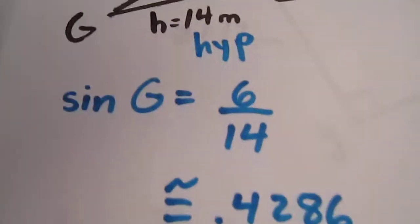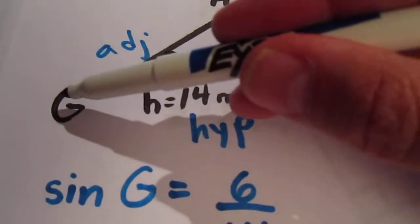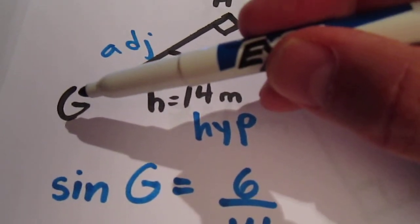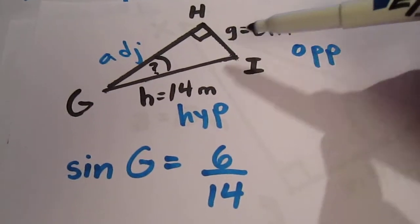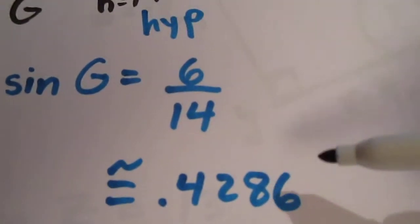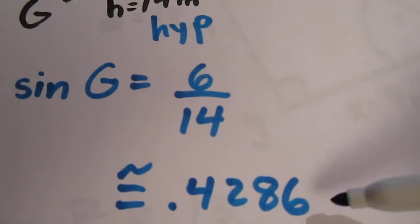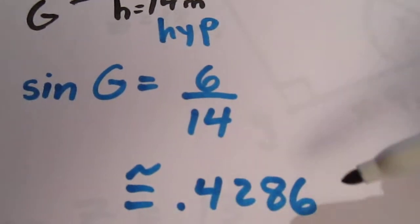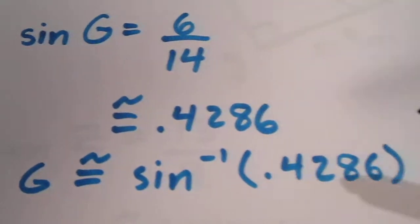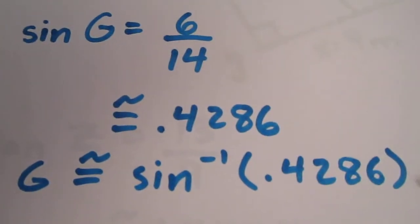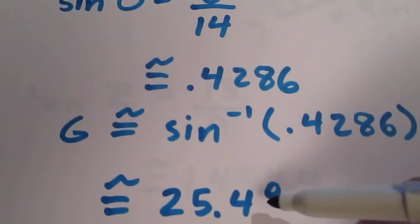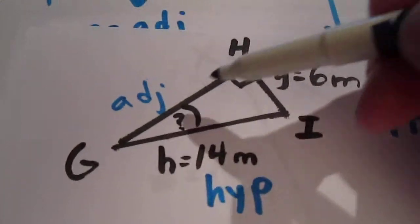We can say that the sine of G — that's how this angle was labeled in the question — is going to equal opposite over hypotenuse, which is 6 over 14. 6 over 14 is approximately 0.4286. Since I know that the sine of G is approximately 0.4286, I can say that G is approximately the sine inverse of 0.4286. The sine inverse of 0.4286 is approximately 25.4 degrees, and I've answered the question.